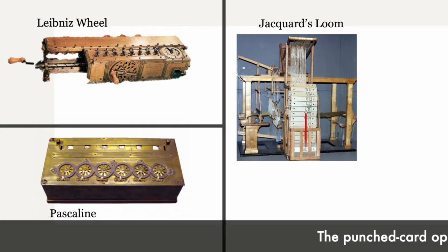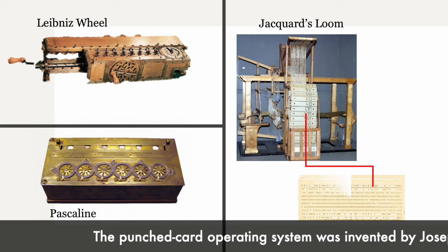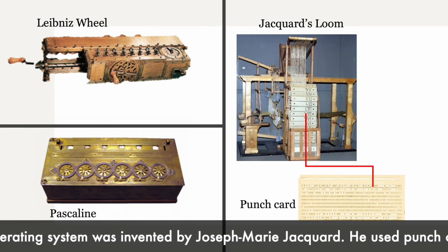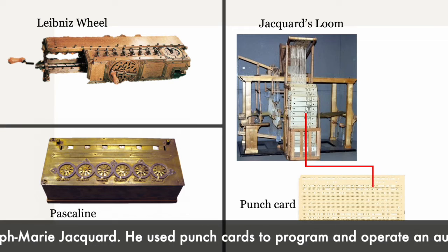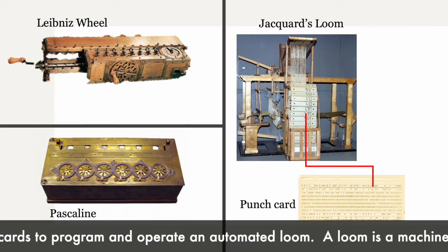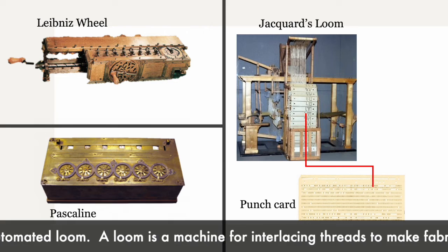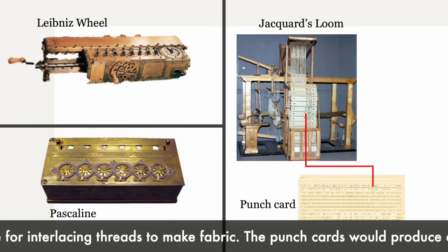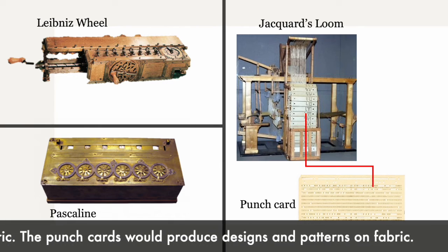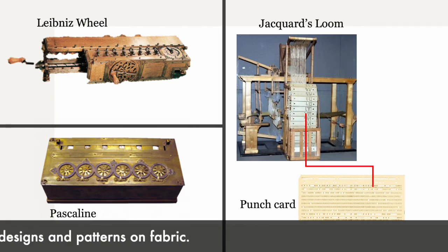The punched cards operating system was invented by Joseph Marie Jacquard. He used punch cards to program and operate an automated loom. A loom is a machine for interlacing threads to make fabric. The punch cards would produce designs and patterns on fabric.